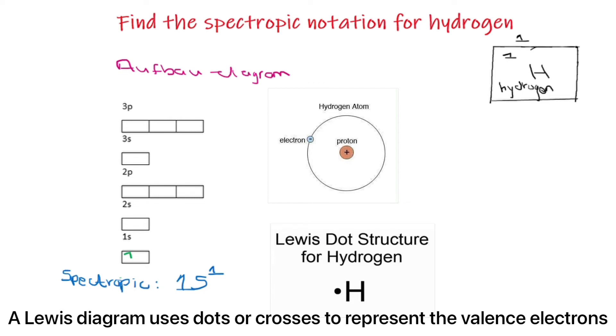Therefore, the Lewis dot diagram will only have 1 dot. Notice that it represents the valence electrons.